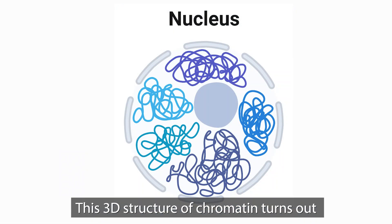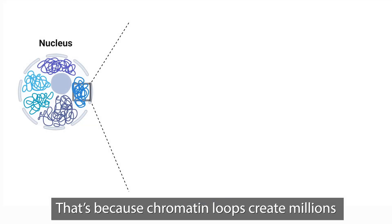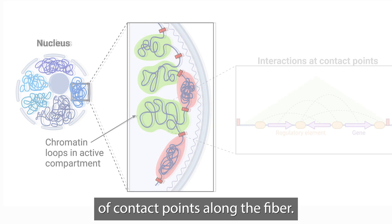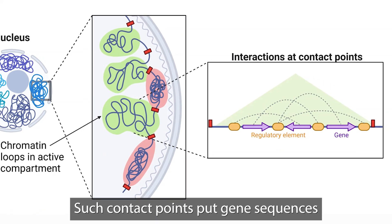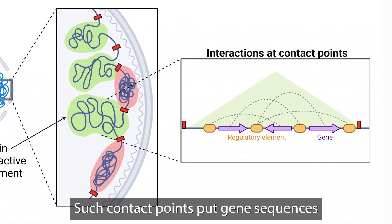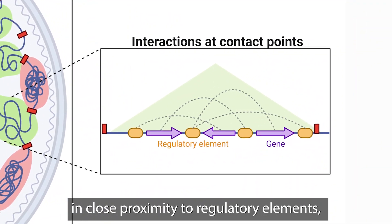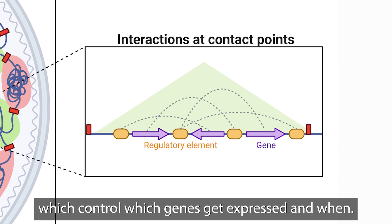This 3D structure of chromatin turns out to be important for gene expression. That's because chromatin loops create millions of contact points along the fiber. Such contact points put gene sequences in close proximity to regulatory elements, which control which genes get expressed and when.